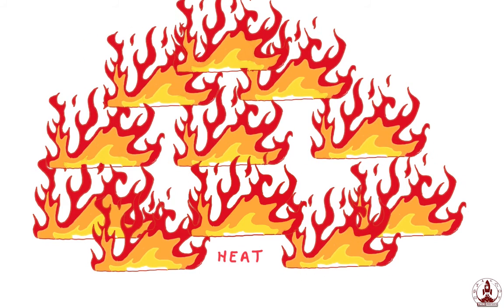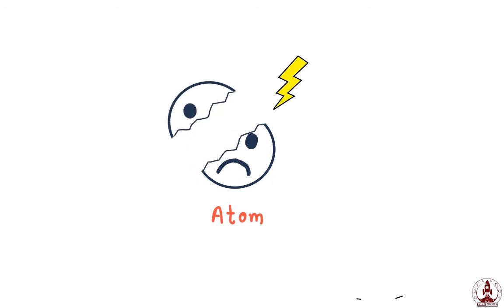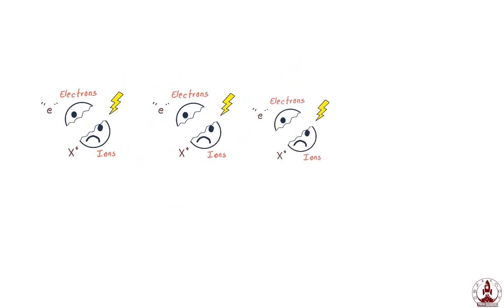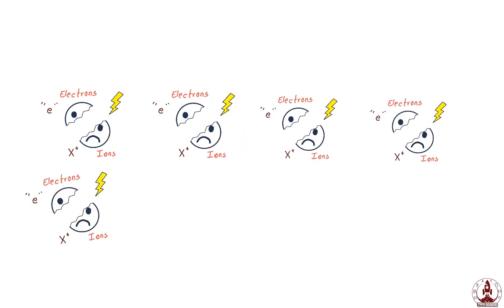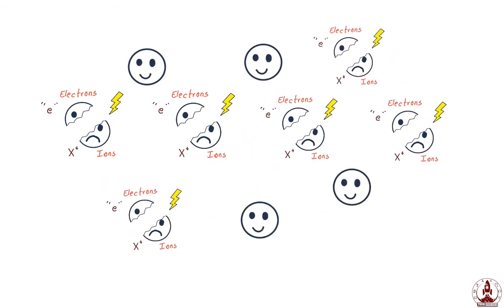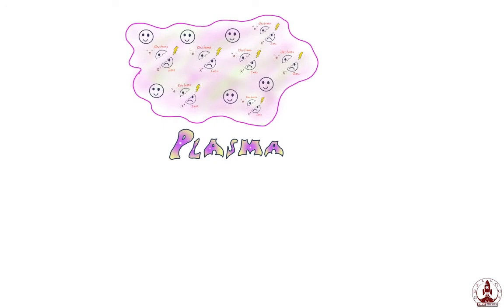What if I increase the heat again, by a lot? Then our tiny little friend the atom is not happy from the excessive input energy — it will break apart into electrons and ions. This soup of broken atoms — which is electrons and ions along with unbroken atoms — is known as plasma, the fourth state of matter.